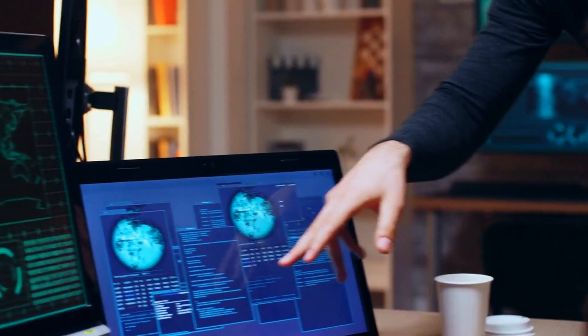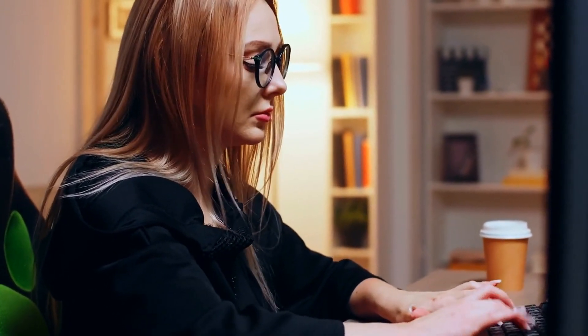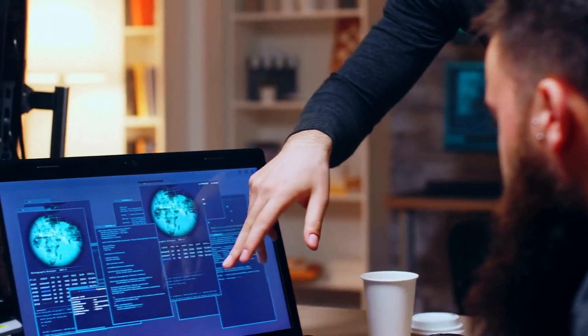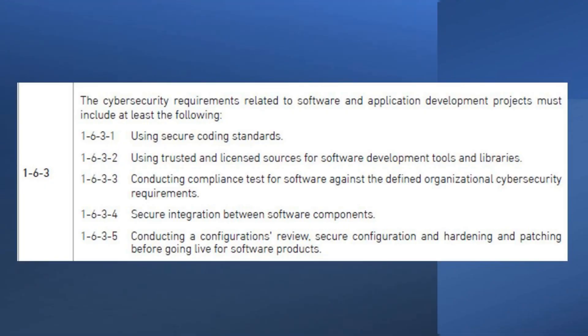Additionally, it's important to have a process in place for identifying and addressing any issues or vulnerabilities that may be discovered during the development process, and to have a plan for how to handle any incidents that may occur once the software is live. Next, I will give you an example of a use case scenario to help illustrate how an organization might meet all five points of the 1-6-3 control.